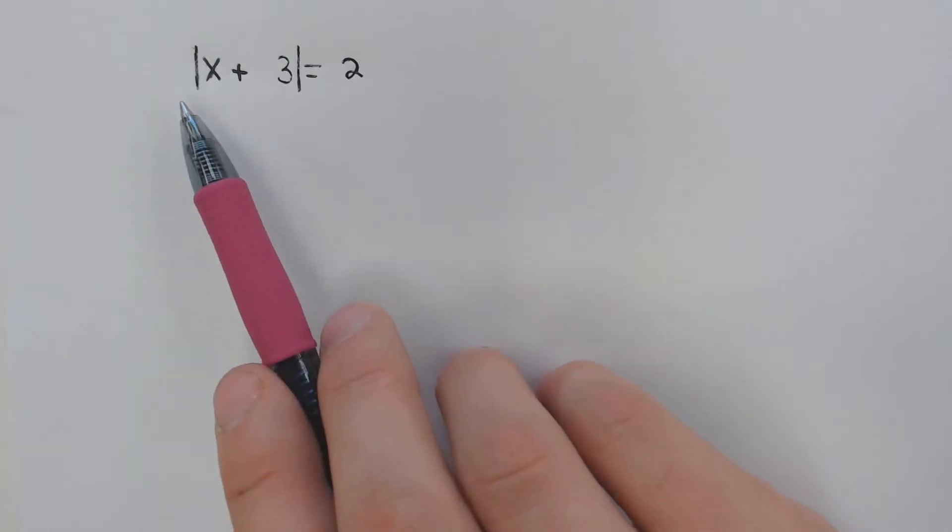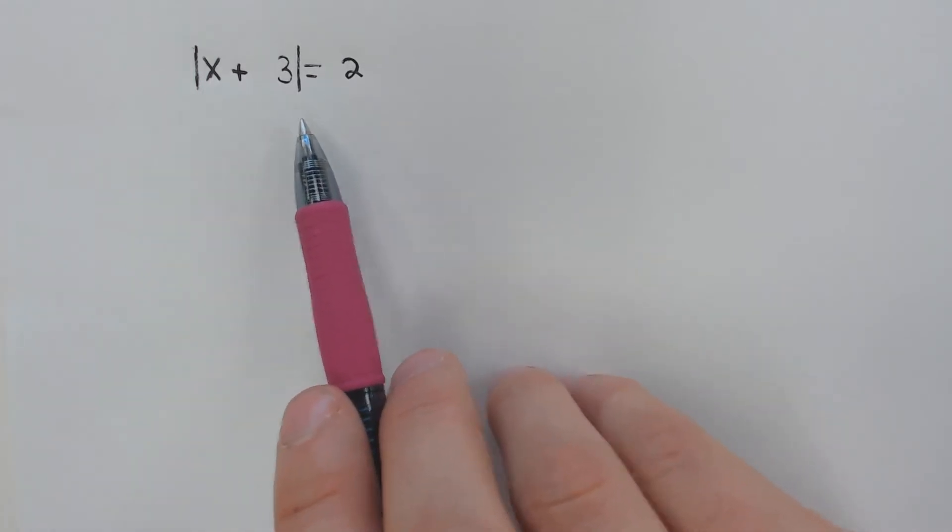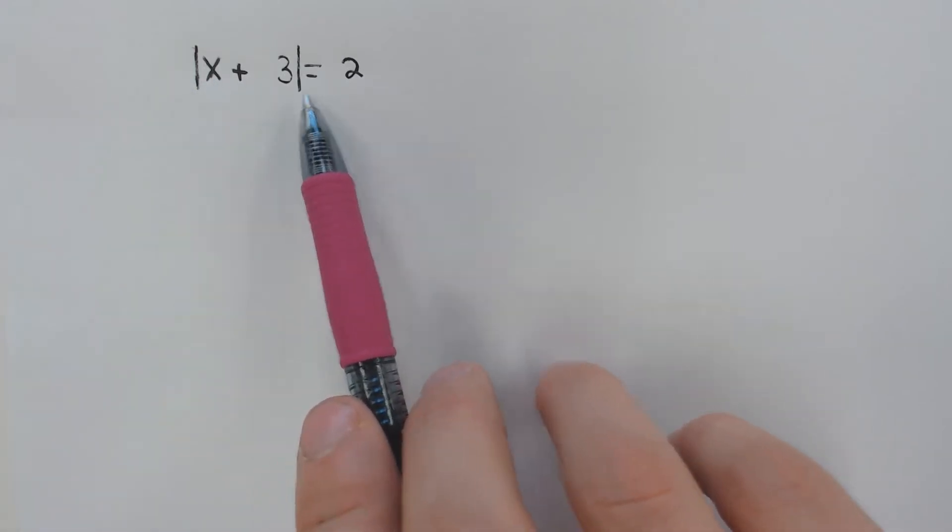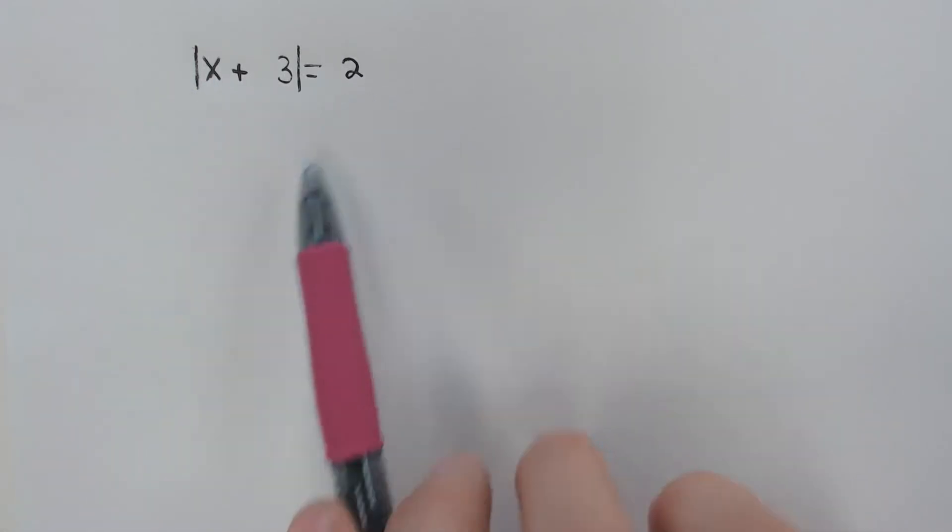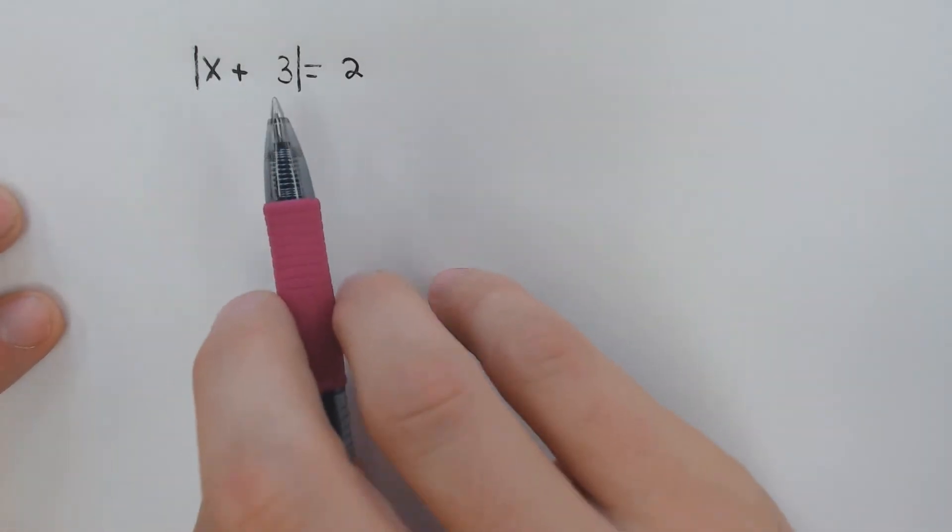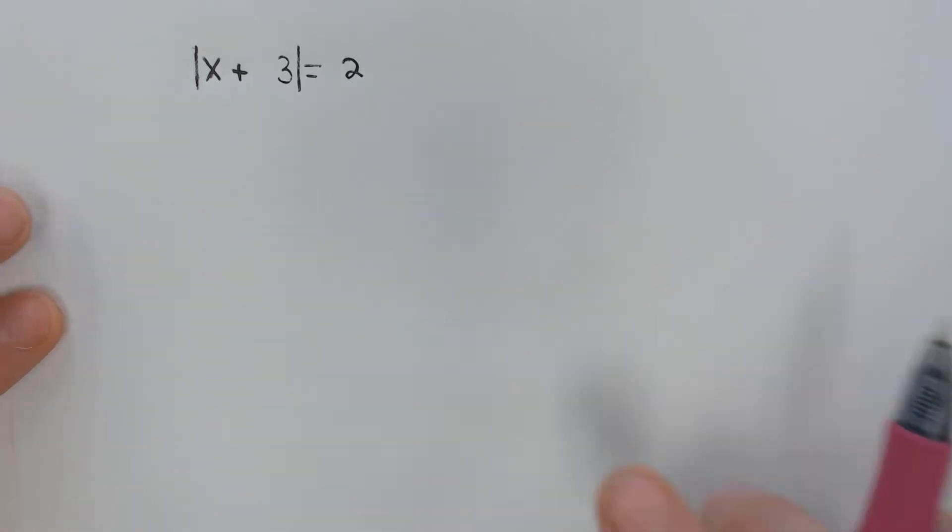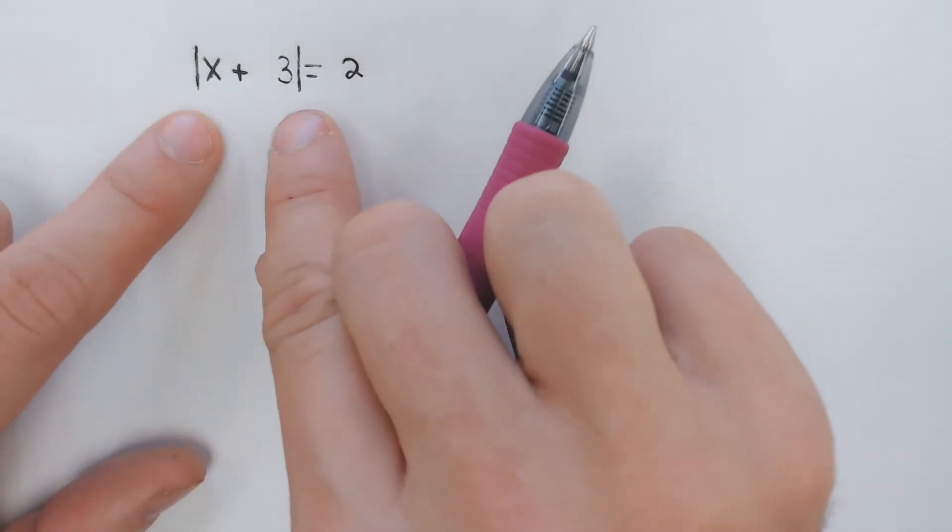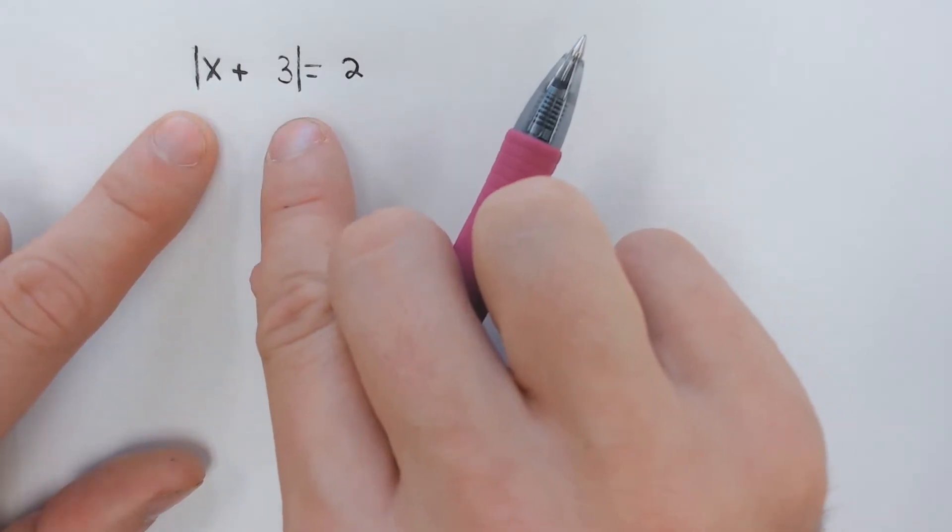An absolute value equation is an equation where you have these absolute value bars equaling to, hopefully, a number, but we're going to go through a variety of different situations. When you're solving these, it's really actually quite simple, provided the absolute value bars are all you have on the left side or the right side of the equal sign and they're isolated.